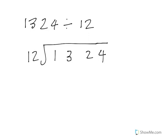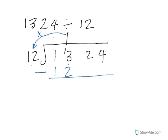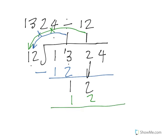We work through: 12 into 1 doesn't go, so we put the 1 with the 3. 12 into 13 goes once. 1 times 12 is 12; 13 minus 12 is 1. Then we bring down the 2, that's 12. 12 goes into 12 once. 1 times 12 is 12, take that away and we get 0.